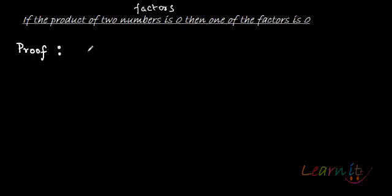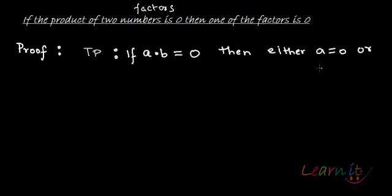What essentially we need to prove is: say a·b equals 0, then either a equals 0 or b equals 0. To prove it, I can also equivalently say that we need to prove: if a·b equals 0 and let us take a as non-zero, then the only choice that we have is that b equals 0.